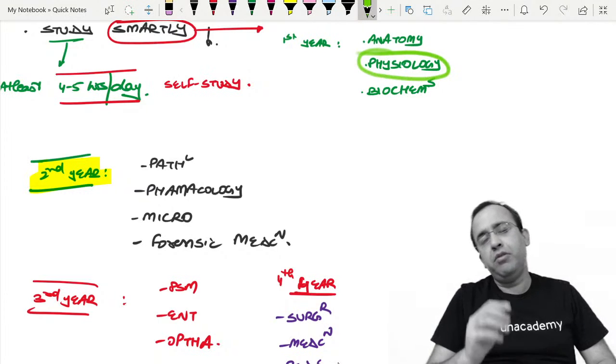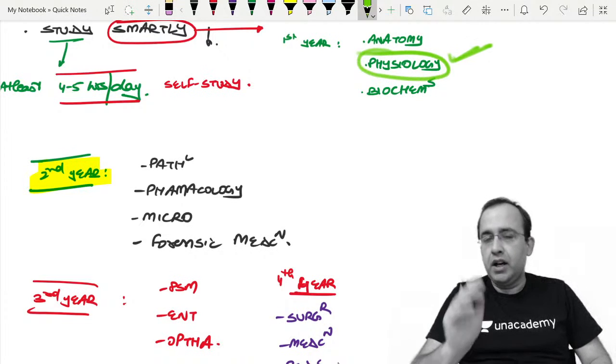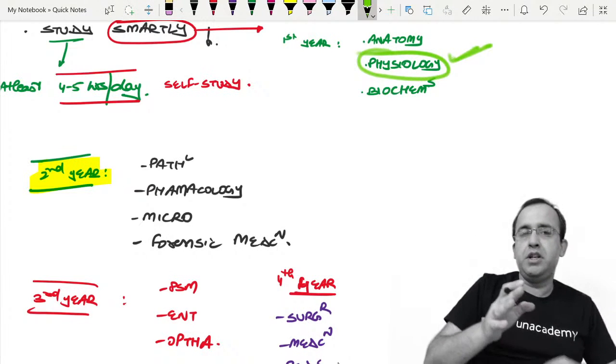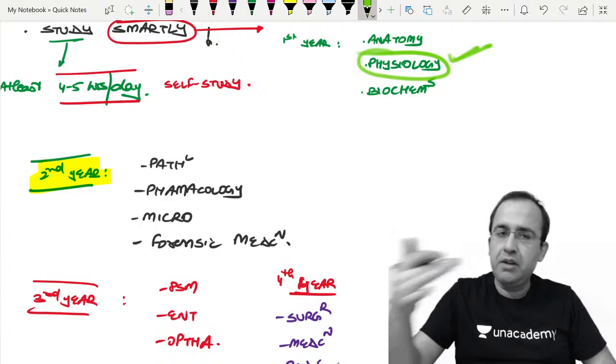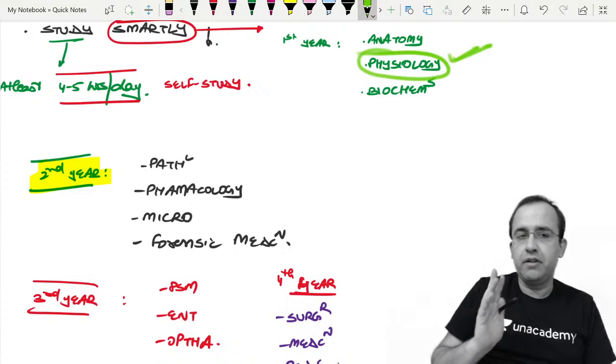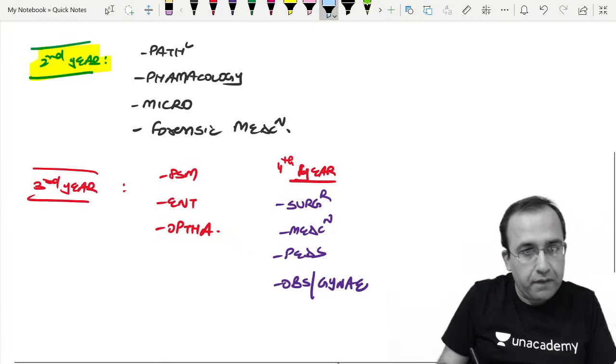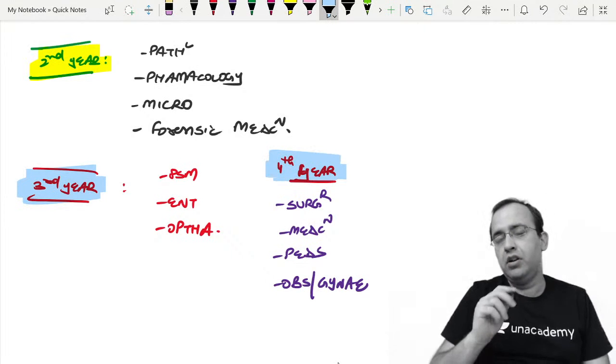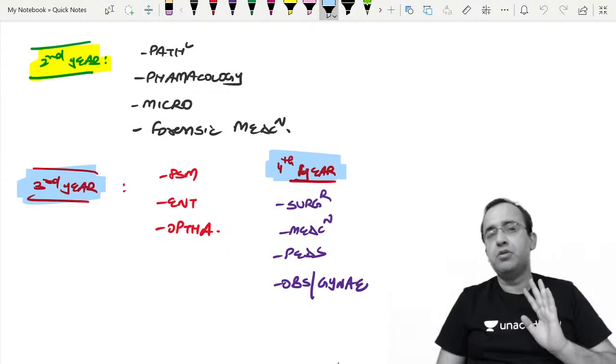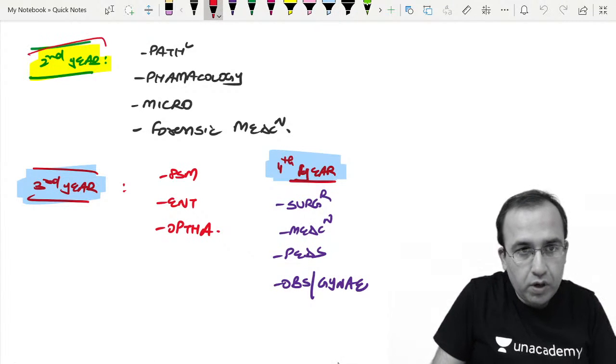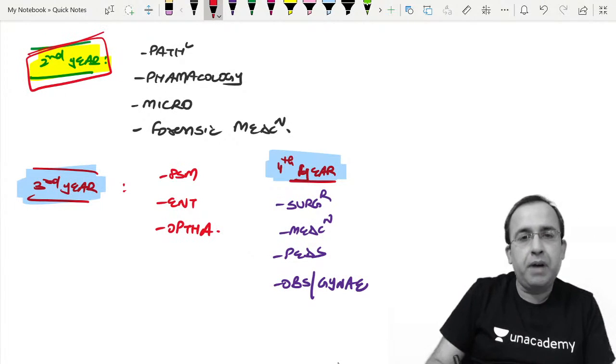When you are studying, follow this schedule. First year, whether you have read anatomy, physiology, biochemistry or not, I am totally comfortable with it. Anatomy and biochemistry are very volatile - we tend to forget it. Physiology will help you in pathology to a certain extent. Whatever has happened in first year has happened, we cannot bring that back. Second year, third year, and fourth year will be important.